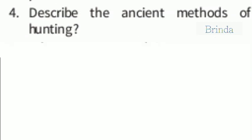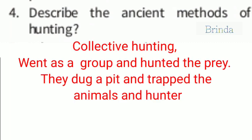Fourth question: Describe the ancient methods of hunting. Collective hunting — they went as a group and hunted the prey together. They also dug a pit and trapped animals; the animals would unknowingly fall inside the pit and be hunted.